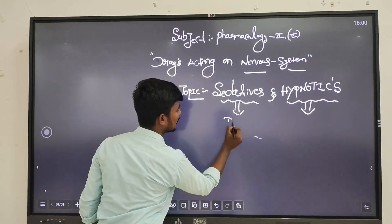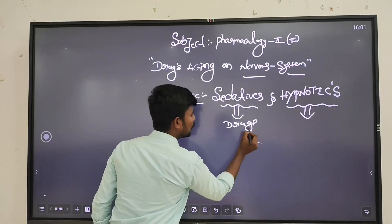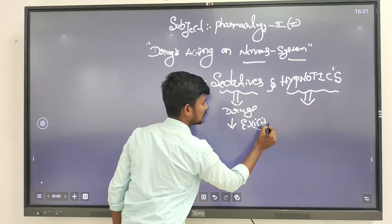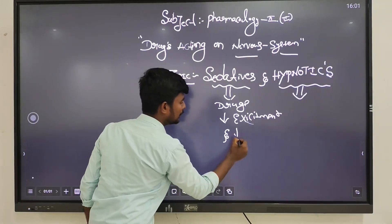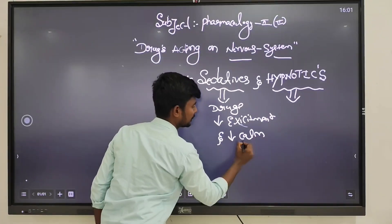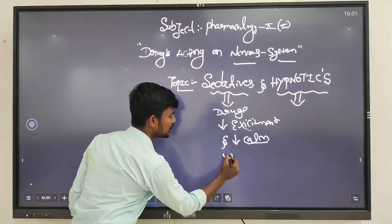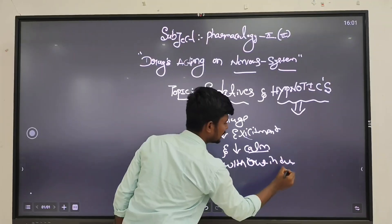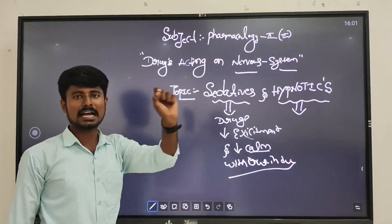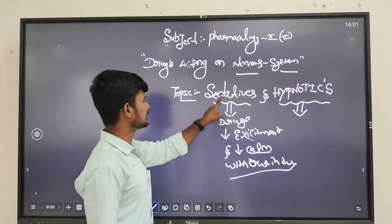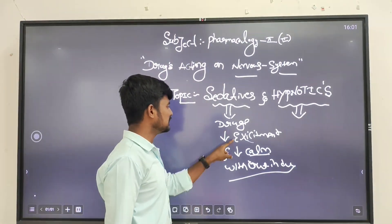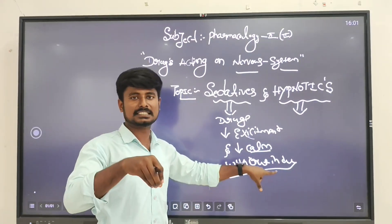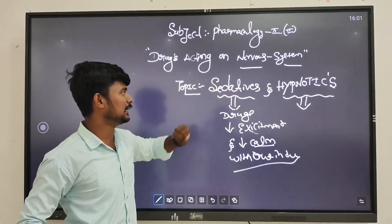First, sedatives. These are the drugs which reduce the excitement of the patient and reduce calmness without inducing sleep. That is called sedatives. The definition: sedatives are drugs which reduce the excitement of the patient and also reduce calmness without inducing sleep.